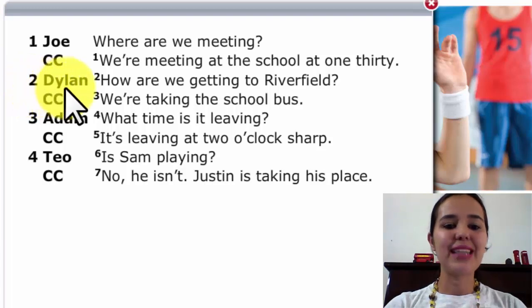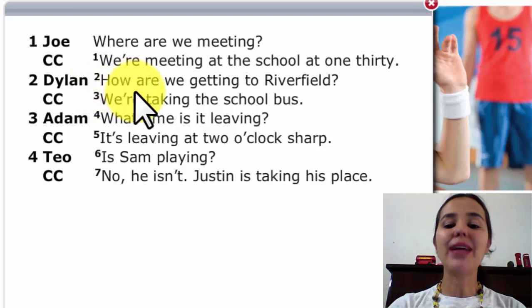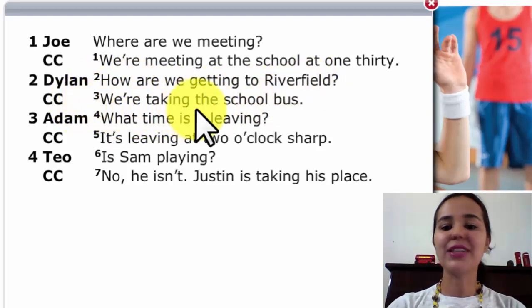Dialogue number 2. Dylan is talking to coach Carson. Number 2. How are we getting to Riverfield? Number 3. We are taking the school bus.